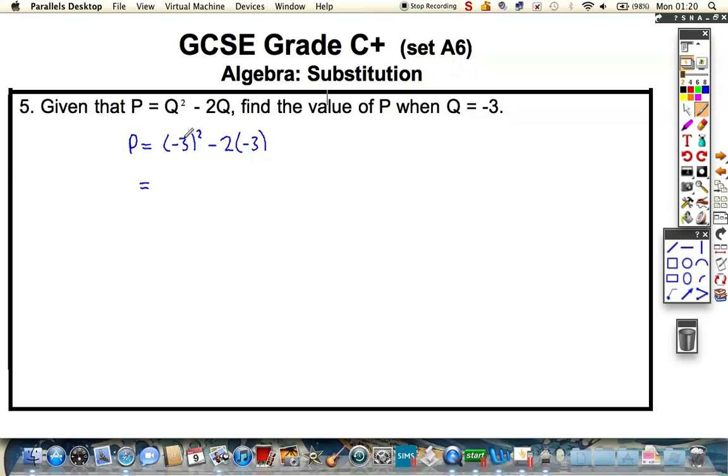So, dealing with each bit in turn, Q squared or minus 3 squared is minus 3 times minus 3, which is plus 9. And minus 2 times minus 3 is plus 6.